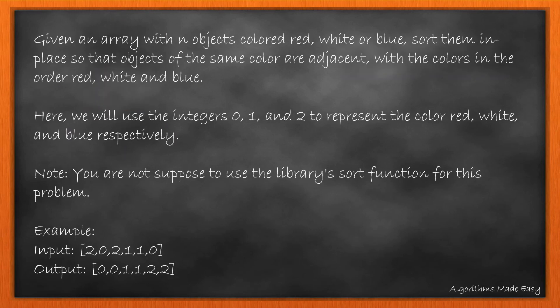Given an array with n objects colored red, white, and blue, we need to sort them in place so that the objects of same color are adjacent with the colors in order red, white, and blue. Here we will use the integers 0, 1, and 2 to represent the color red, white, and blue respectively.